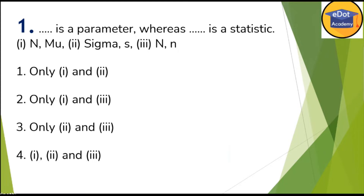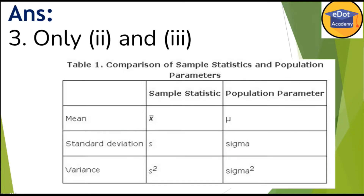A parameter is a characteristic of a population — when taking a sample, you have to adopt one population from where you are going to take that sample. So parameter is related to population, whereas statistic is related to sample. Sample is always smaller than the population. This is the technique of sampling, and these are the characteristics.